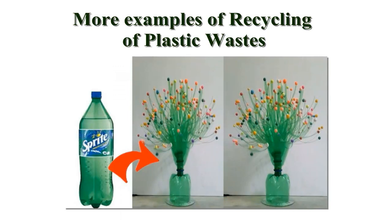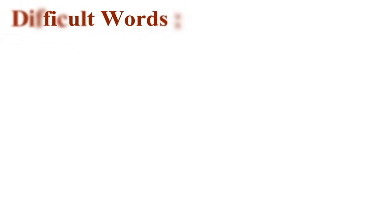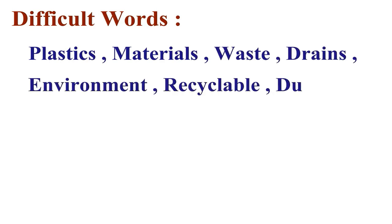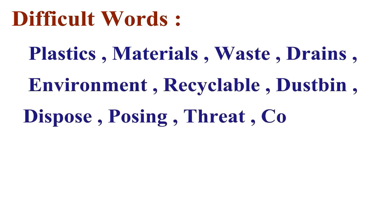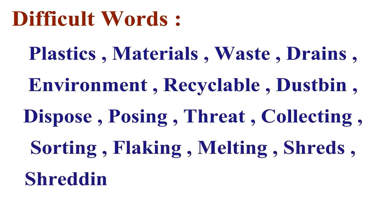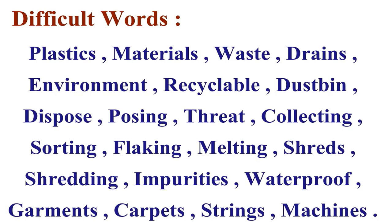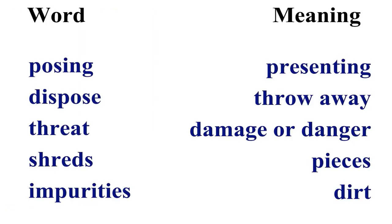Let's go through difficult words from the lesson: plastics, materials, waste, drains, environment, recyclable, dustbin, dispose, posing, threat, collecting, sorting, flaking, melting, shreds, shredding, impurities, waterproof, garments, carpets, strings, and machines. Key meanings: 'posing' means presenting; 'dispose' means throw away; 'threat' means damage or danger; 'shreds' means pieces; 'impurities' means dirt.